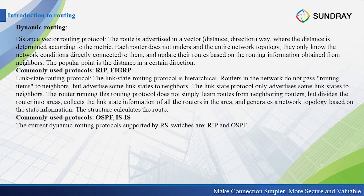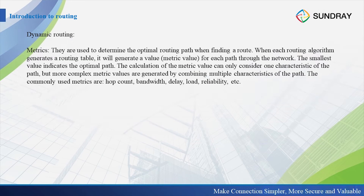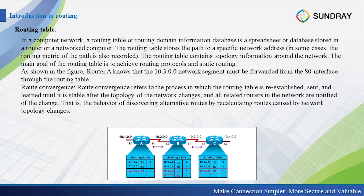For dynamic routing, it can be divided into two kinds. Let's look at the routing table. In a computer network, a routing table or routing information database is a spreadsheet or database stored in a router or networked computer. The routing table stores the path to a specific network address.